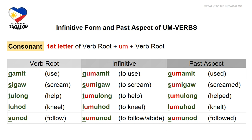Now we'll go over verb roots that start with consonants. The rule is: first letter of the verb root plus UM plus the rest of the verb root. Our first example is gamit, meaning use — as a noun, gamit means things, but here we look at it as a verb root. To form the infinitive, insert UM after the letter G: gumamit, meaning to use. The past aspect is also gumamit, meaning used.